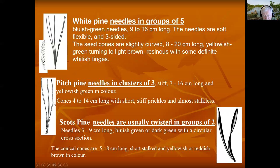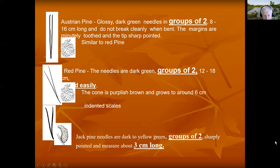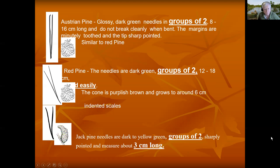Scots pine has needles in groups of two, usually twisted. Austrian pine and red pine also have needles in groups of two.